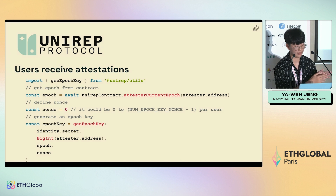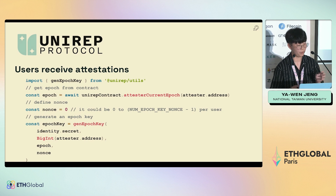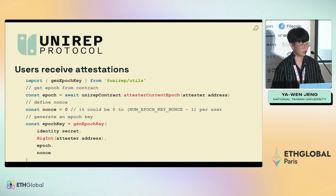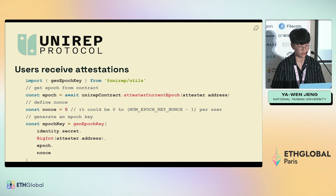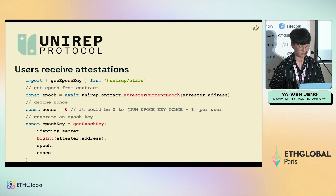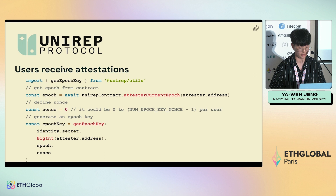Epoch keys are like addresses, but they only last for one epoch. An epoch can be like one day, seven days, one week, or something like that. If the epoch is too short, you're not able to use the epoch key for long. If the epoch is too long, you have to use the same identity for a long time. This is how it generates a temporary identity called an epoch key.